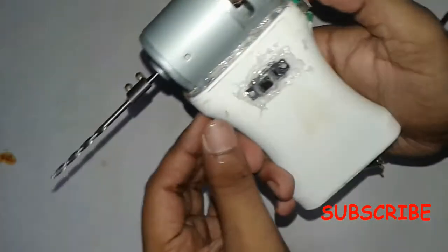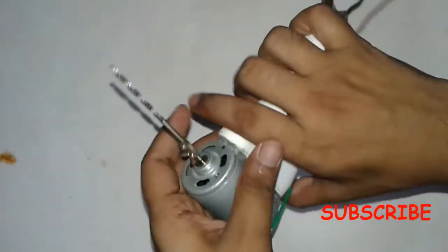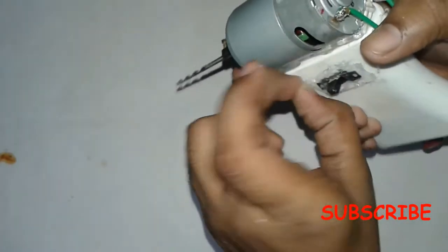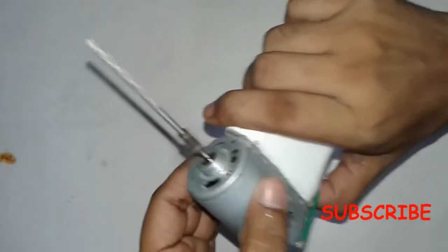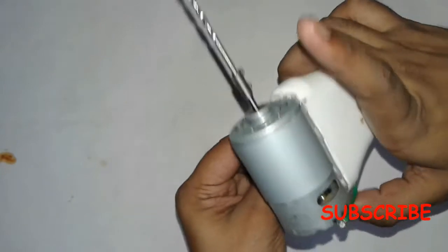So you can make any type of hole in a plastic type object and small thickness wooden objects very easily with that drill. You can also change the rotation.